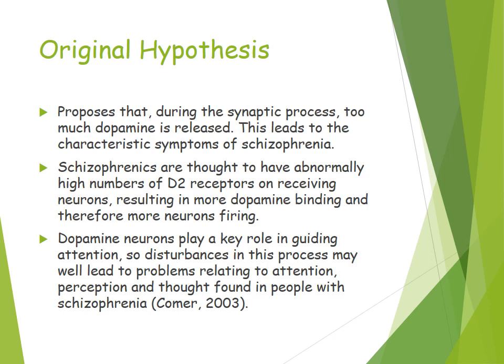The original hypothesis stated that during the synaptic process, too much dopamine is released, and that leads to the symptoms of schizophrenia. Schizophrenics are thought to have abnormally high numbers of D2 receptors, which results in more dopamine binding and therefore more neurons firing.